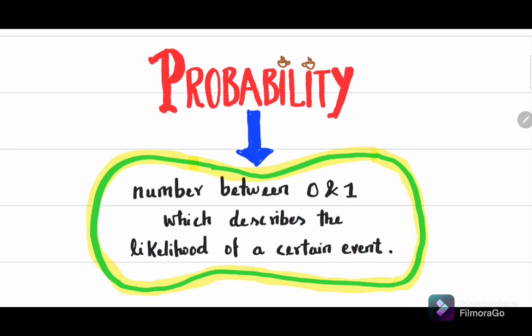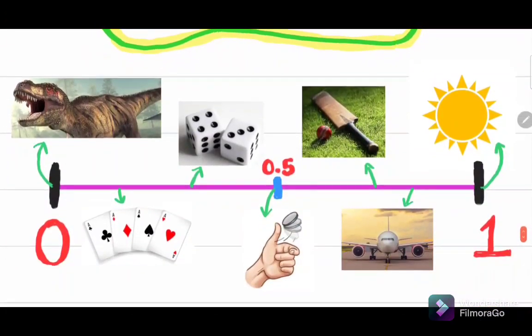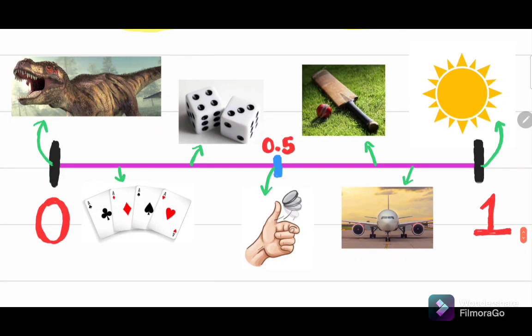The probability of zero means that something is impossible. The probability of one means that something is certain. For example, it is impossible to meet a real-life dinosaur, and it is certain that the sun will rise tomorrow.